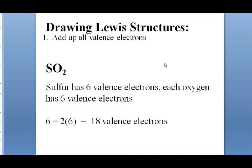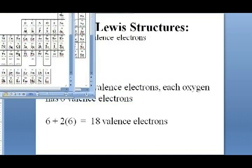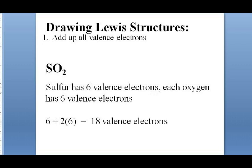Let's look at SO₂ as an example. Step one: add up all the valence electrons. Sulfur has six valence electrons, each oxygen has six, so we have a total of 18 valence electrons to work with. Step two: draw the skeleton structure using single bonds. Sulfur is less electronegative than oxygen, so put it in the center with single bonds to each of the oxygens.